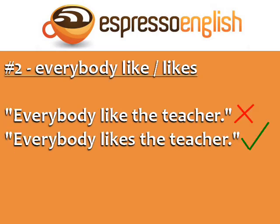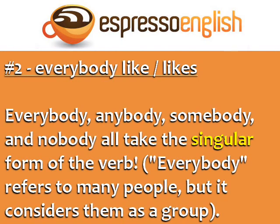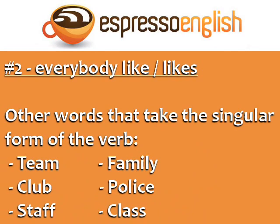Number two: everybody like or likes? 'Everybody like the teacher' is incorrect. The correct sentence is 'everybody likes the teacher.' The words everybody, anybody, somebody, and nobody all take the singular form of the verb. Everybody refers to many people, but it considers them as a group. Other words that refer to many people but take the singular form of the verb include: team, club, staff, family, police, and class.